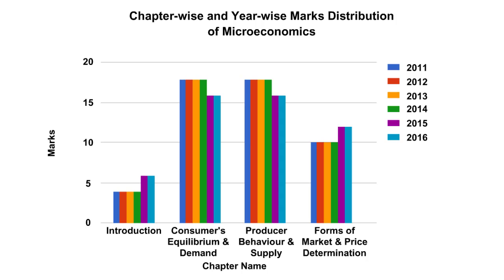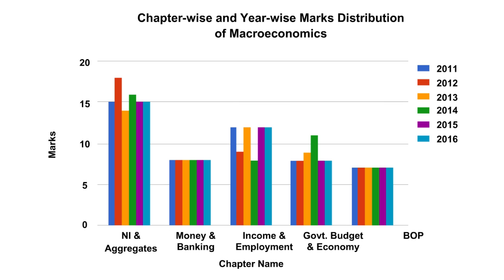Talking about the chapter-wise marks distribution, it has remained the same. In microeconomics, questions were basically asked from Chapter 2, that is consumer equilibrium and demand, and Chapter 3, that is producer behavior and supply. In macroeconomics, the maximum weightage was given to national income accounting and determination of income and employment.